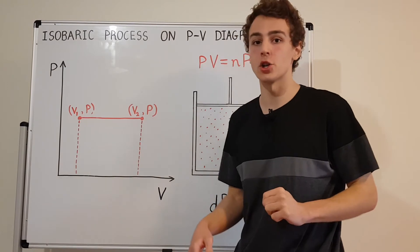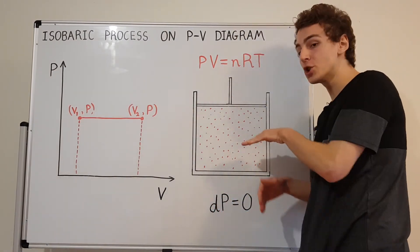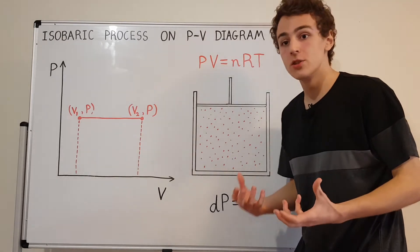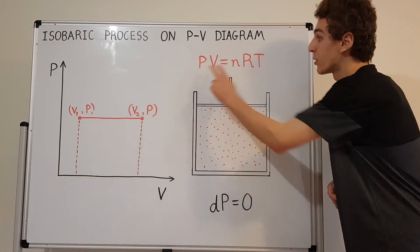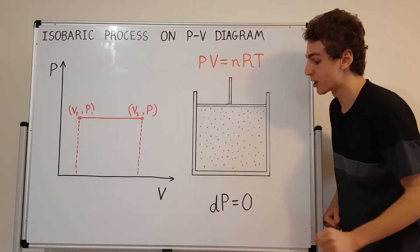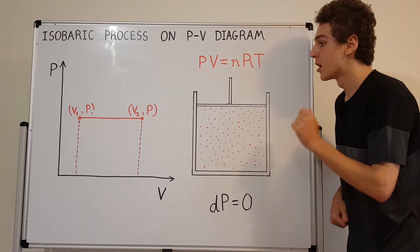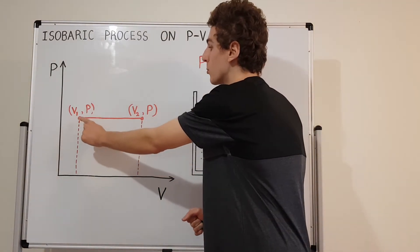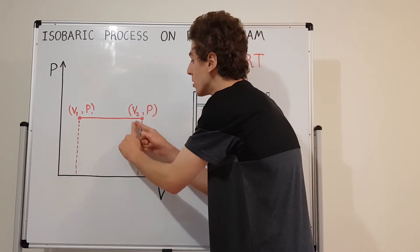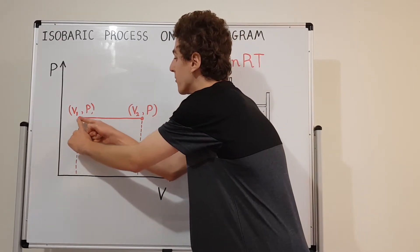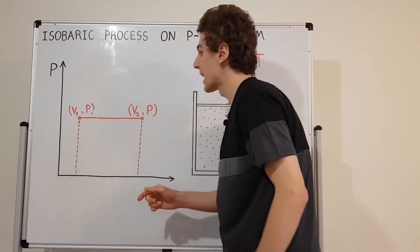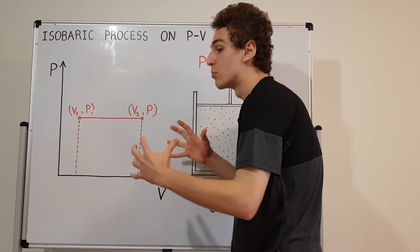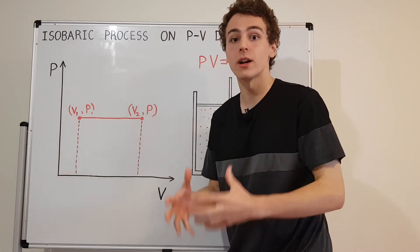What would happen if you have compression? If the piston is being pushed down and we're compressing this ideal gas, what do we need to do to make sure the pressure doesn't change? Let's look at the diagram. If we start at V2 and move towards V1, we begin at this point, travel along the horizontal line, and finish here. The volume decreases. This is isobaric compression.